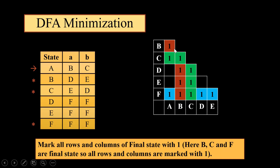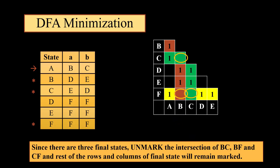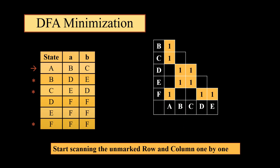Now we will mark all the rows and columns corresponding to the final states with one — that means B will be marked, C will be marked, and F will be marked. Once we have marked them, the next step is to unmark the intersection of all the final states, that is BC, BF, and CF will be unmarked. Rest all of the rows and columns which were marked with one will remain as they are. Now we start scanning all the rows and columns which are left out.